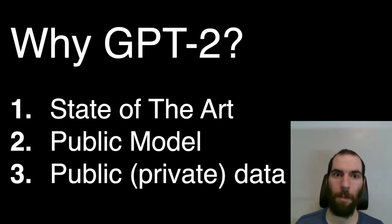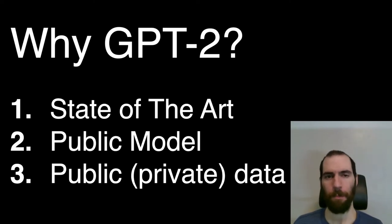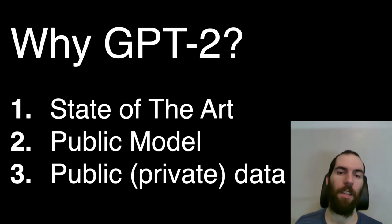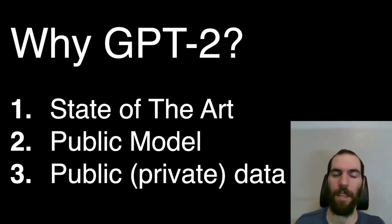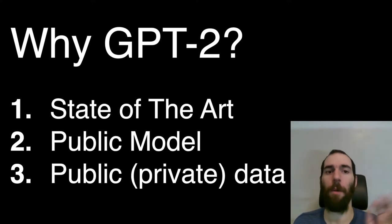We also attack this model because it is public — anyone in the world can access it, which mitigates the harm of only us being able to perform this kind of attack. Another factor is that GPT-2 was trained only on data from the public internet. So even if we succeed beyond our wildest dreams and extract all sorts of training data, we can only extract data that was already public online — nothing terribly sensitive. On the other hand, the 40-gigabyte training dataset was never released by OpenAI, so we can't accidentally cheat by overfitting against some test set.